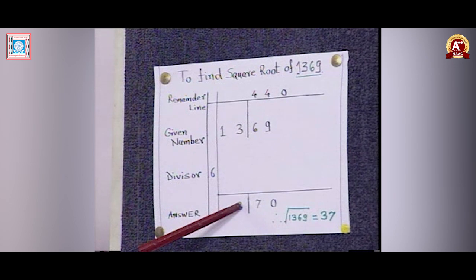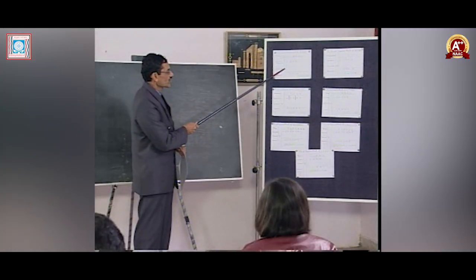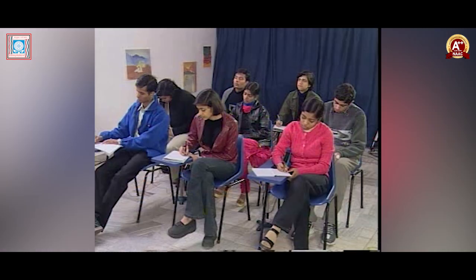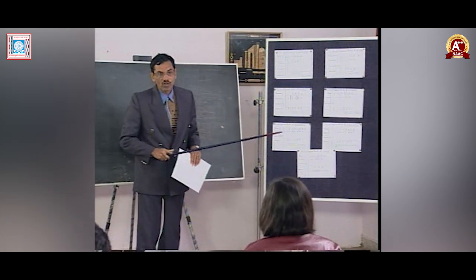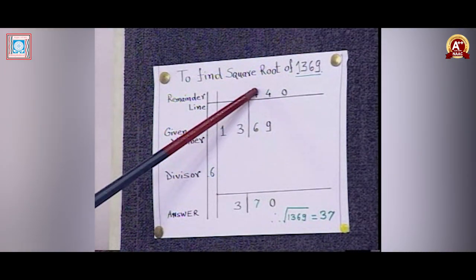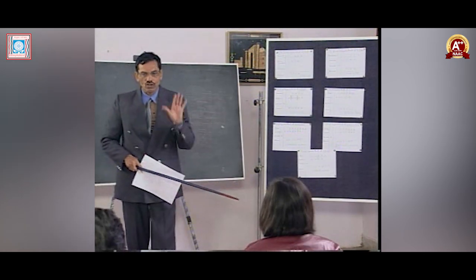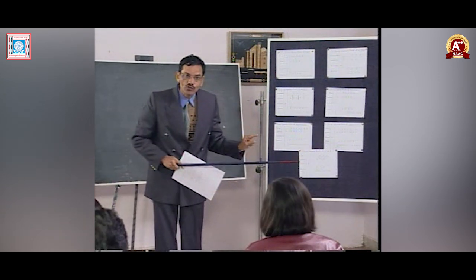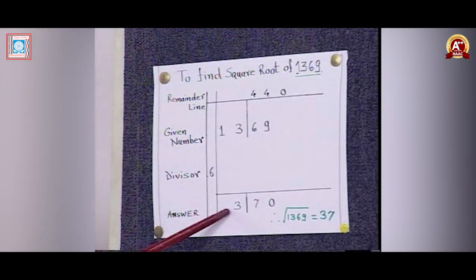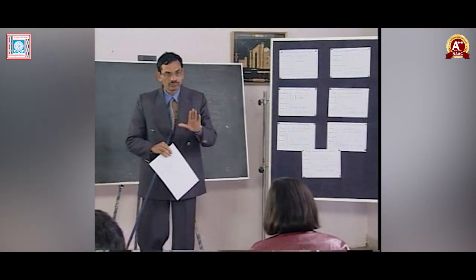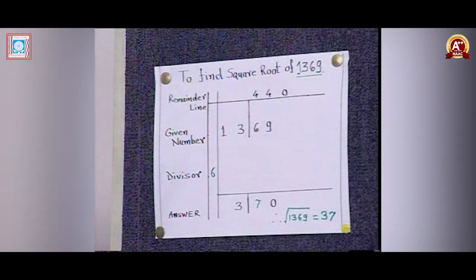We selected 3 because 3 squared equals 9, which is nearest to 13. So 3 is the first digit of the answer. Then 3 multiplied by 2 gives 6, which will work as our divisor. And 13 minus 9 equals 4, which is the first digit of the remainder. Once this is done, it remains a simple division to find the remaining digits of the answer.